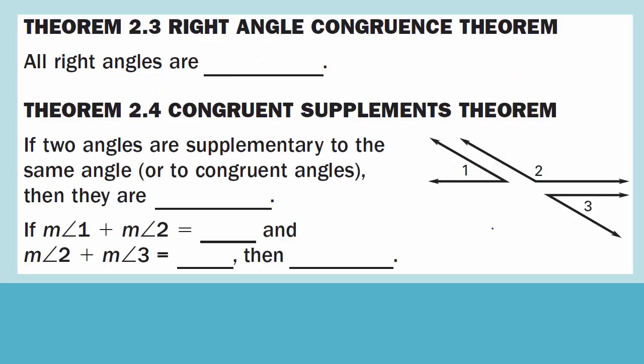Theorem 2.3: Right Angle Congruence Theorem. All right angles are congruent. This is because all right angles have the same measure, which is 90 degrees.